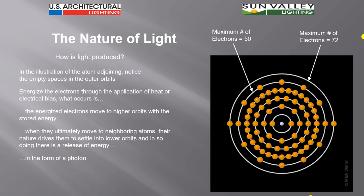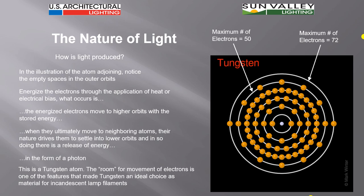Now this particular atom that we're seeing here is a tungsten atom. The room for movement of electrons is one of the features that makes tungsten an ideal choice as material for incandescent lamp filaments. The fact that you have so much room for electrons to move into the fifth or the sixth orbital band because there's so few that are there, and the fact that tungsten has an extremely high melting temperature.